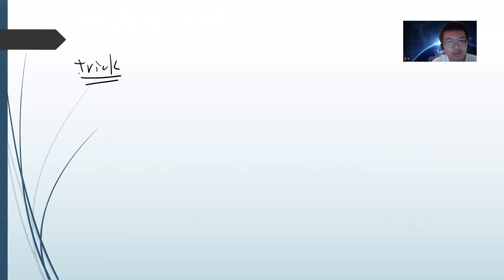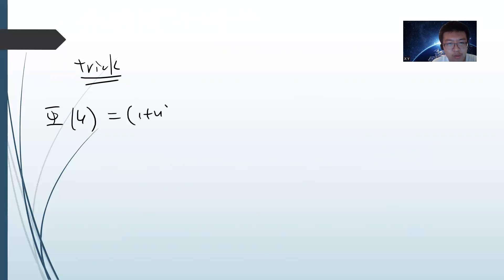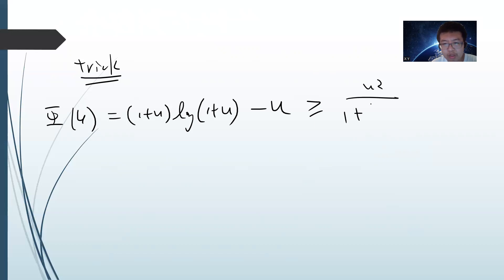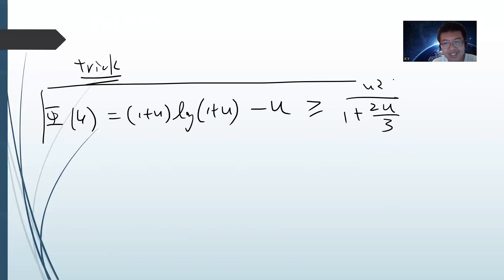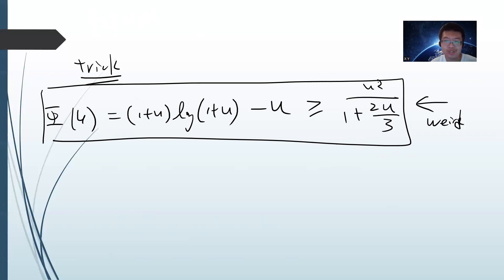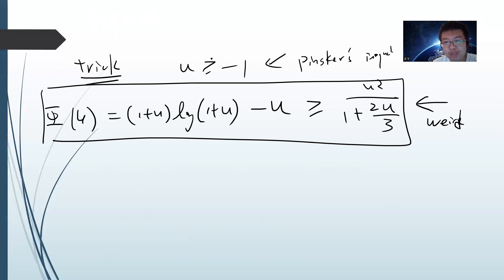The key trick here is a result I'll cover in another video called the Pinsker's inequality. That result gives a very non-trivial inequality: phi of u, defined as one plus u times log of one plus u, minus u, is greater than or equal to u squared divided by one plus two times u divided by three. This is valid for u greater than or equal to minus one. This is really non-trivial, and the proof is very difficult — you can try to prove it yourself or check out my Pinsker's inequality video to see why it's true.